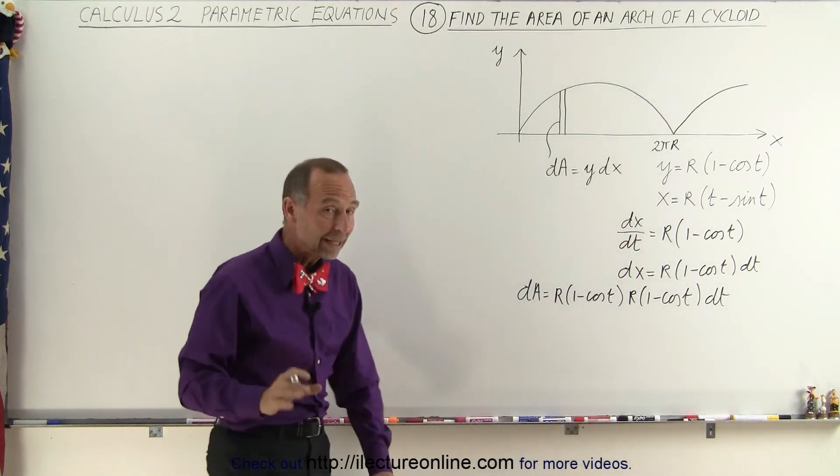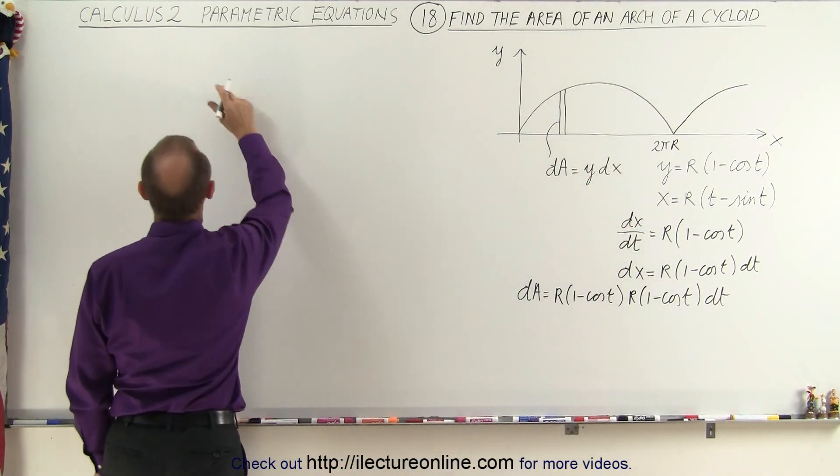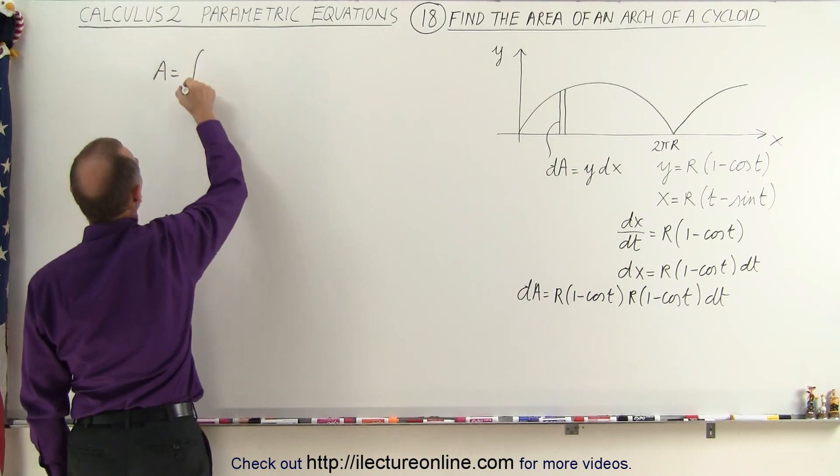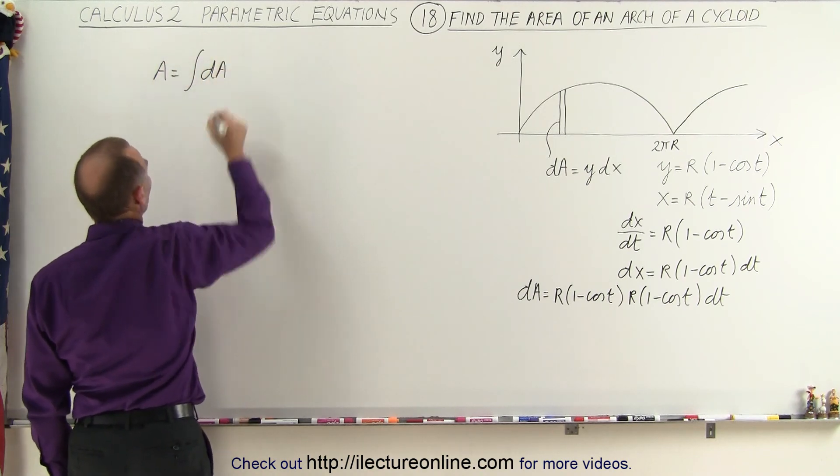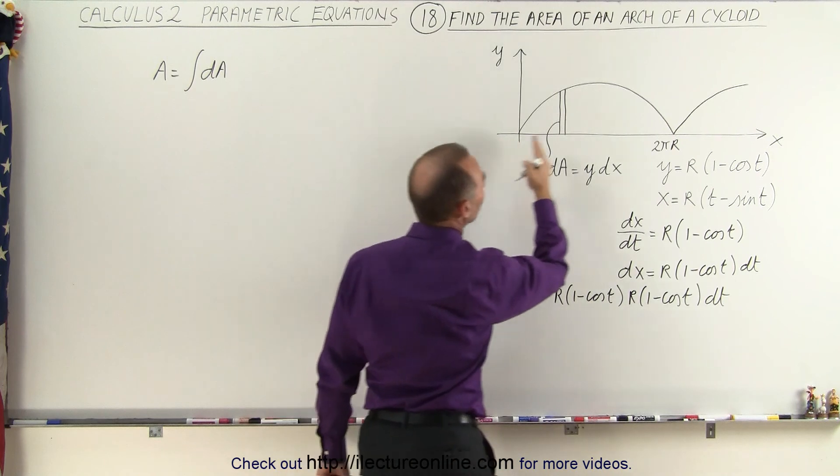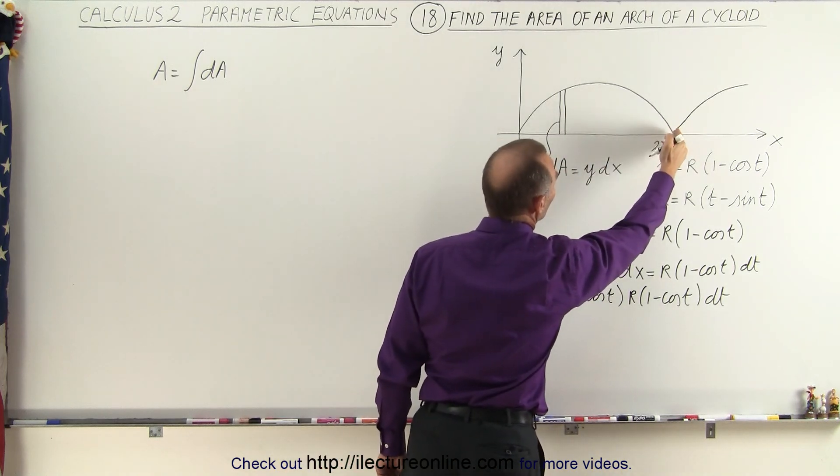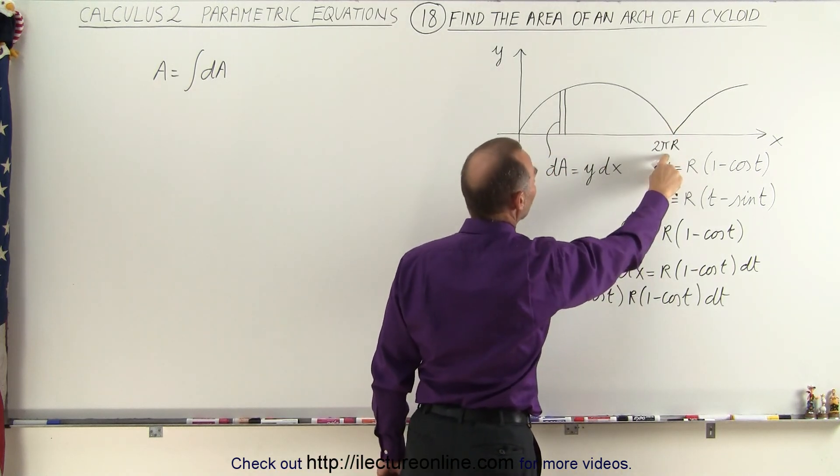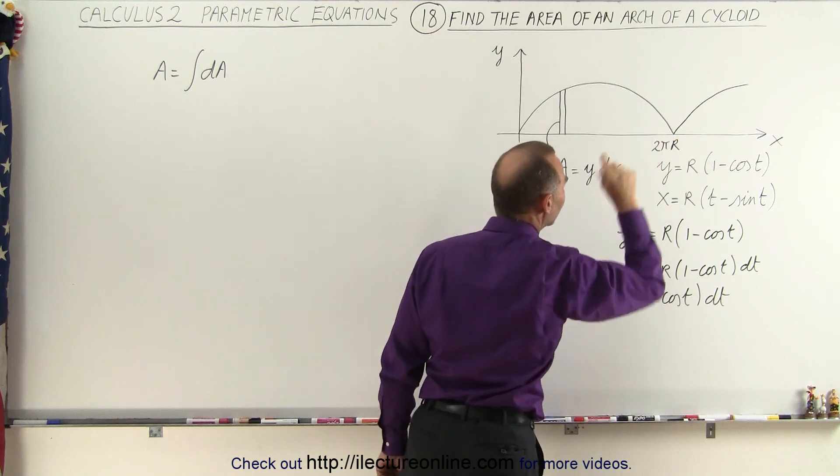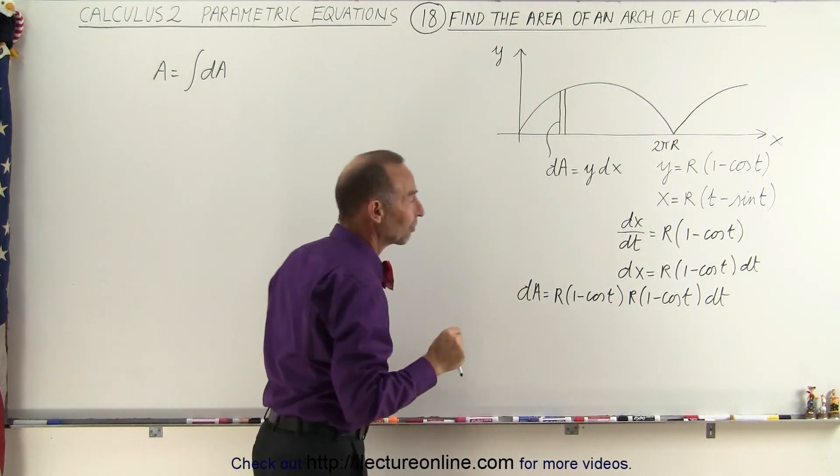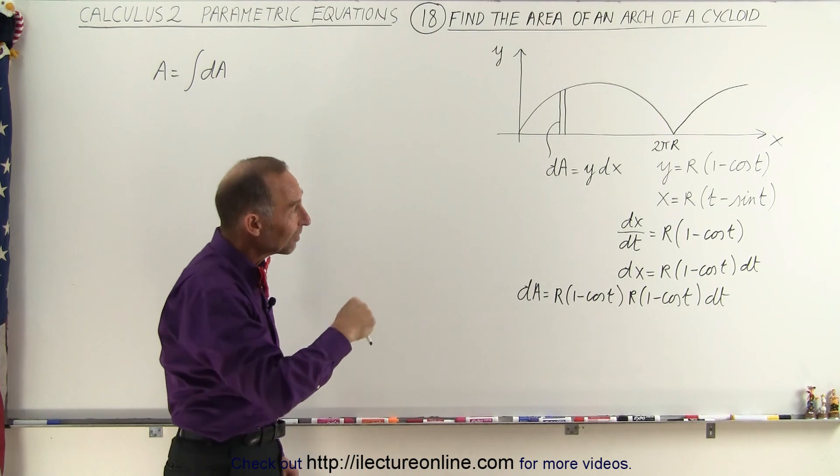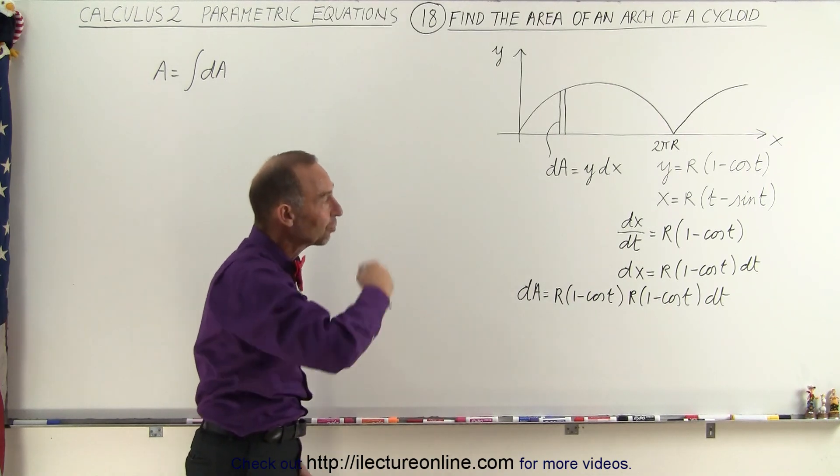The reason why we need that dA is because we're going to integrate. The area is going to be equal to the integral of all the dA's and we're going to integrate from the origin to where it meets the x-axis right here. But notice that we cannot use the limits in terms of the x variable, we need to use the limits in terms of the parametric variable t which represents the angle of the rotation of a circle.